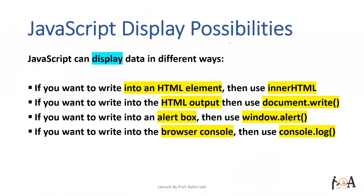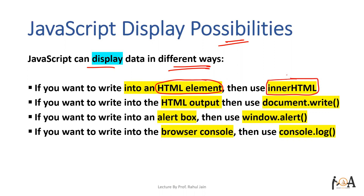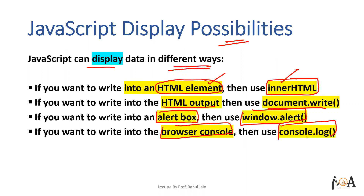The next topic is JavaScript display possibilities. JavaScript can display data in different ways. If we want to write content into an HTML element, we use innerHTML. To write into the HTML output, use document.write. To write into an alert box, use window.alert. And to write into the browser console, we use console.log.